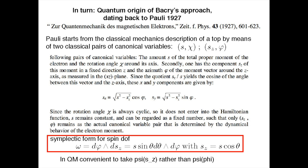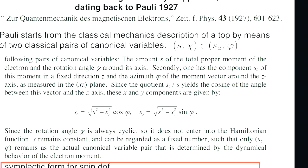What is nice is that Pauli starts from the classical Hamiltonian description of spin, and what he says — which is not totally evident if you open modern textbooks — is that spin in classical mechanics is described by two pairs of canonical variables: S, chi and S_z, phi, where S is the magnitude. S is the total proper momentum of the electron, the total spin, and chi is the angle of rotation around the spin axis. He immediately says that he is interested in a system with fixed spin, and the angle of rotation will not appear in the observable, so we can totally forget about this canonical pair.